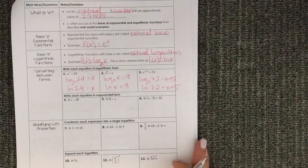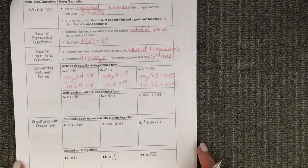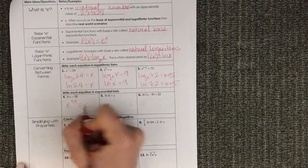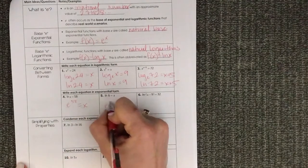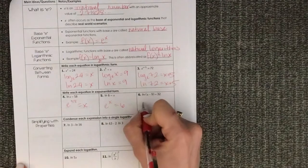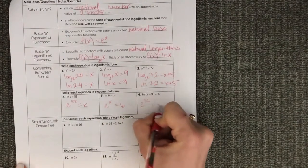And then going in the other direction, exponential form. So this is e to the 58 equals x. This is e to the x equals 6. Remember this is understood base E. This is e to the 32 equals x minus 9.